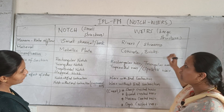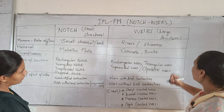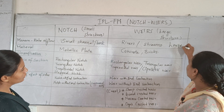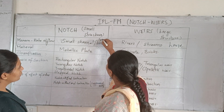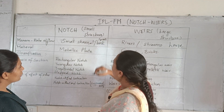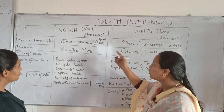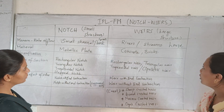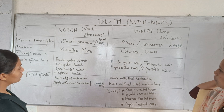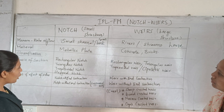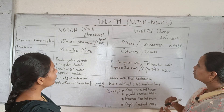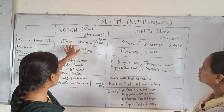For weirs, the rate of flow is large 'r'. So the rate of flow for a weir is large 'r'. For a notch, because of its small structure, the rate of flow is small 'r' — used for a small channel or small tank.